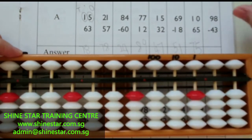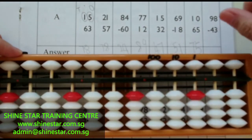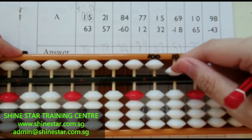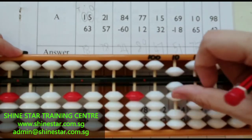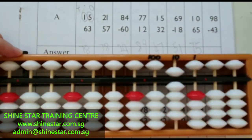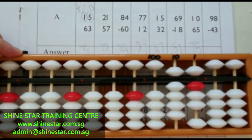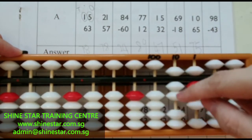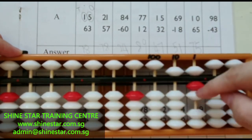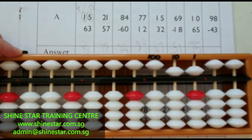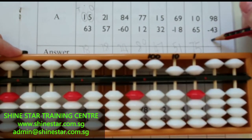The last question: ninety-eight minus forty-three. Fifty, sixty, seventy, eighty, ninety. Five, six, seven, eight. Minus forty-three: ten, twenty, thirty, forty. One, two, three. So the answer is fifty-five.